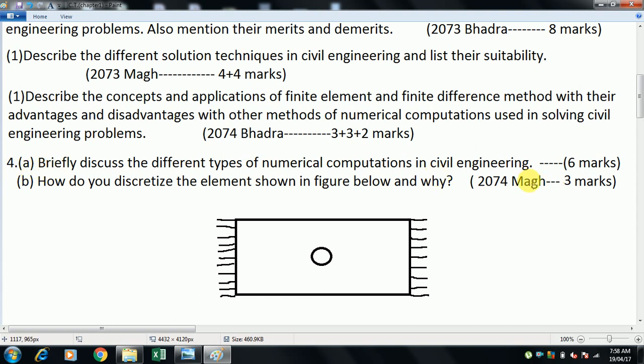This is Group B, the structure portion. Question 4(a): Briefly discuss the different types of numerical computations in civil engineering.